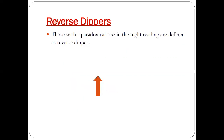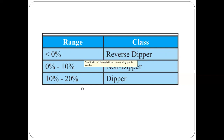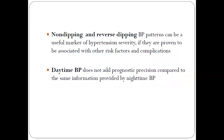Reverse dipping refers to those with a paradoxical rise in nighttime readings. In reverse dippers, the systolic blood pressure during nighttime falls less than zero percent — there is actually a paradoxical rise. Patients where the systolic BP fall is between zero and 10% are non-dippers, and those with a fall of 10 to 20% are classified as dippers.